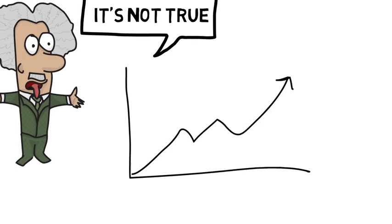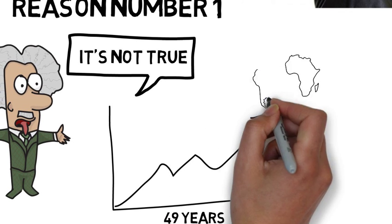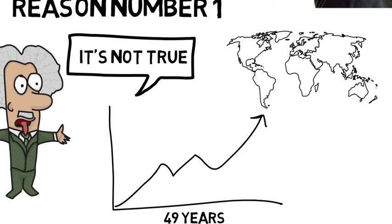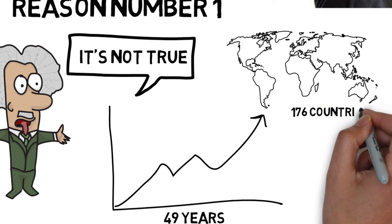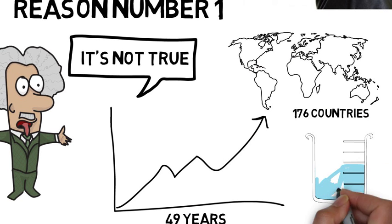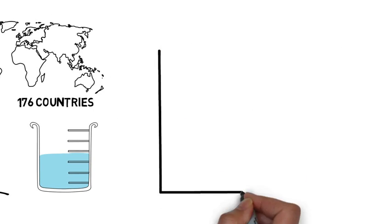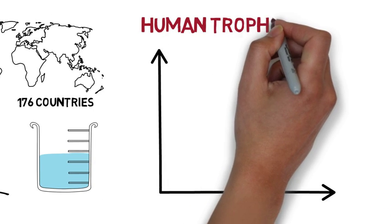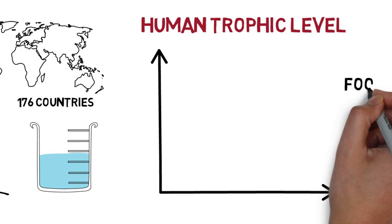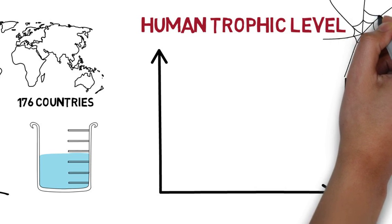Now, in a 49-year analysis of human food consumption over 176 countries, it found that we only sit around the middle mark. The measurement that is used is called the human trophic level, a measurement of species position in the food web.